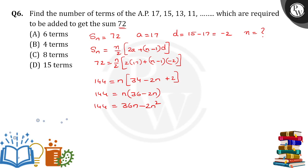Transpose the right-hand side: 2n squared minus 36n plus 144 equals 0. If I take 2 commonly, n squared minus 18n plus 72 equals 0.